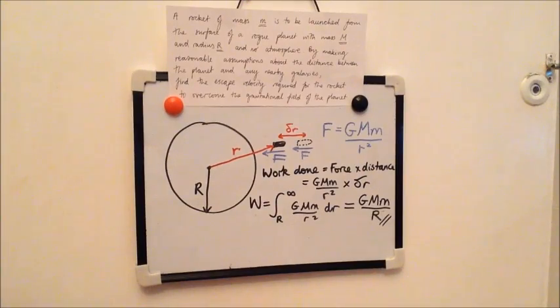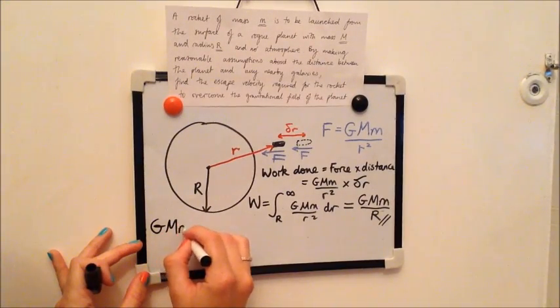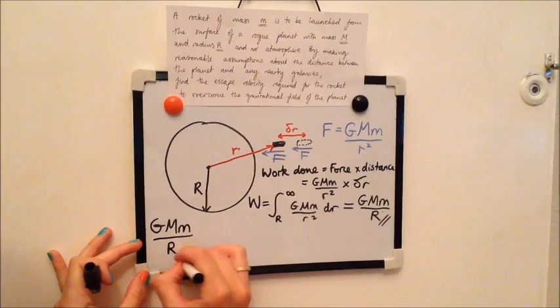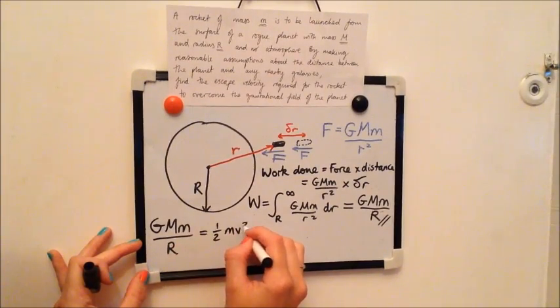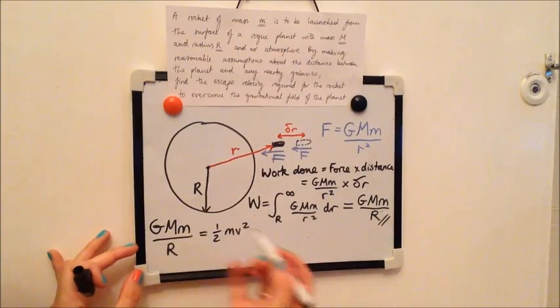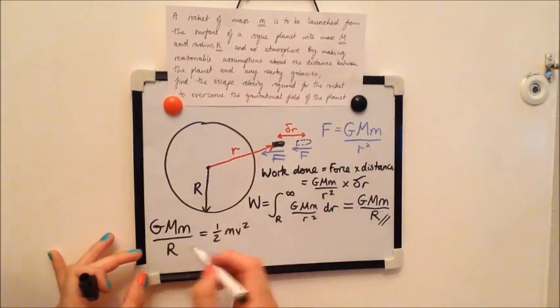So now we have the total work needed to get the rocket from here to outside the gravitational field. Now through energy balance you know that the work done that is needed to do this must be equal to the initial kinetic energy that the rocket has when it's at the surface of the planet. And so therefore we can write that the result of our integral must be equal to half mv squared. And from now on it's just rearranging to find v, which is the escape velocity as specified in the question.